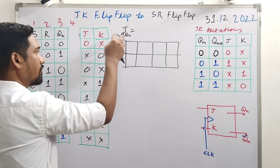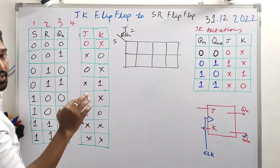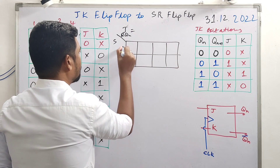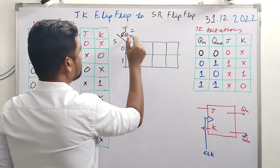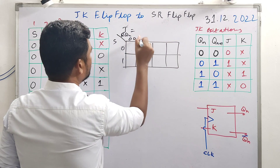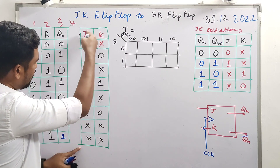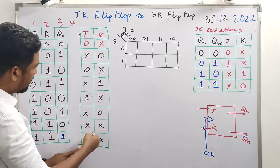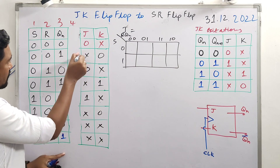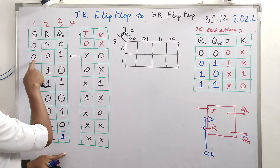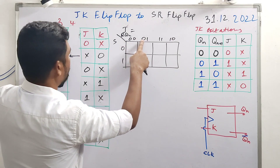Setting up the three-variable K-map for J: S, R, and Q(n) are the variables. The K-map is a 2×4 map. We place values: 0,0 gives zero; next is one. Plugging in the combinations - S=0, R=0, Q(n)=1 and S=0, R=0, Q(n)=0 combinations are filled.